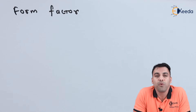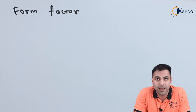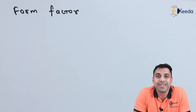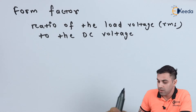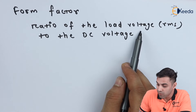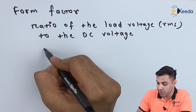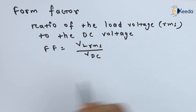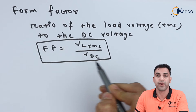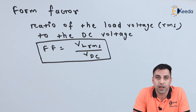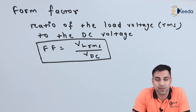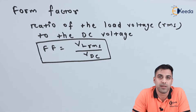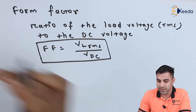The form factor is defined as the ratio of the RMS value of the load voltage to the DC voltage. So, form factor FF = V_L_RMS / V_DC. In further calculations, when we go through the rectifier in detail, we will be calculating the form factor, the DC value, and the RMS value of the load.